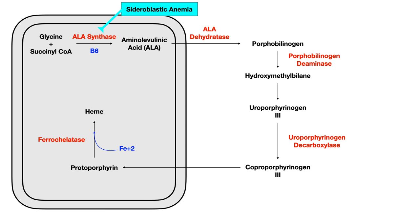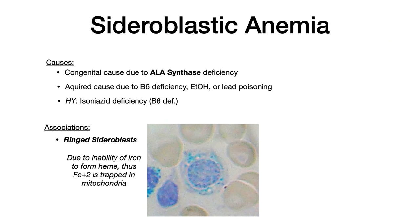First: when ALA synthase is dysfunctional, you get sideroblastic anemia. The cause can be congenital — an X-linked deficiency of ALA synthase — or acquired, due to B6 deficiency, alcoholism, or lead poisoning. The high-yield association is that isoniazid can cause B6 deficiency; since B6 is the cofactor for ALA synthase, it's functionally as if ALA synthase itself is absent, causing sideroblastic anemia.